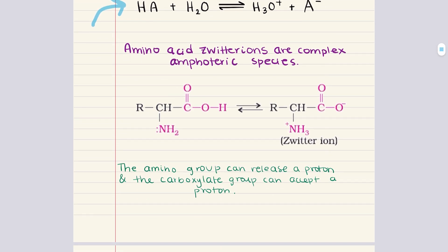Other common examples of amphoteric species include amino acids and partially deprotonated polyprotic acids. Amino acids are particularly interesting because they contain both a carboxyl group, COOH, which can donate a proton, and an amino group, NH2, which can accept a proton — this dual functionality is really important in biological systems. Partially deprotonated polyprotic acids like bicarbonate and bisulfate also exhibit amphoteric behavior. Certain metal oxides and hydroxides, such as aluminum hydroxide and zinc oxide, are also considered amphoteric — they can react with both acids and bases, but since they do not necessarily involve proton transfer, they're not classified as amphiprotic.